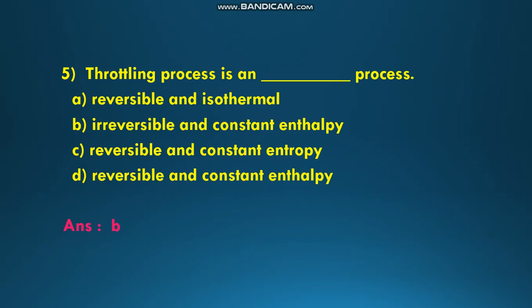The next question is: throttling process is an ___ process. The options are A: reversible and isothermal, B: irreversible and constant enthalpy, C: reversible and constant enthalpy. The throttling process is an irreversible and constant enthalpy process. Once the throttling process is done, it is irreversible and carried out at constant enthalpy. The answer is B.